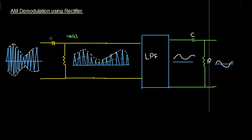AM demodulation using the rectifier is performed using this circuit. We have a diode and a resistor followed by the low-pass filter, then a DC blocking capacitor followed by a resistor. The AM modulated signal is applied to the diode, which removes the negative part of the AM signal, giving us only the positive part — this is our half-wave rectifier.